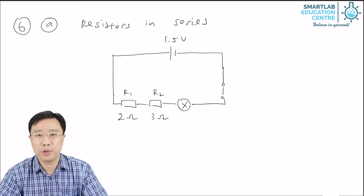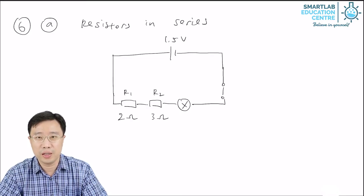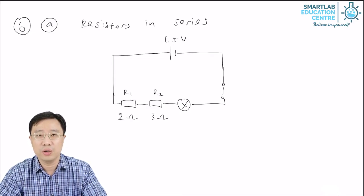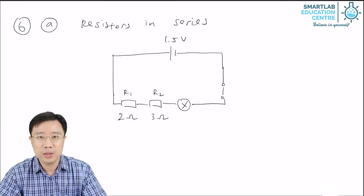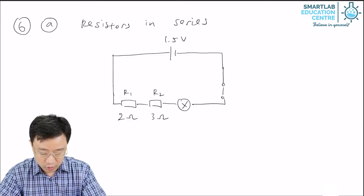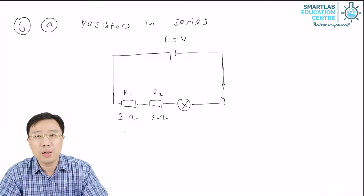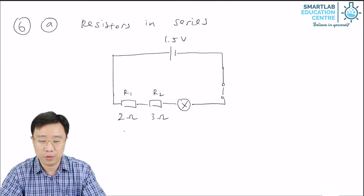In the diagram for point number six, you see that there is an electric circuit with two resistors. I'll label them R1 and R2. So R1 has the resistance of 2 Ohm, R2 has the resistance of 3 Ohm.